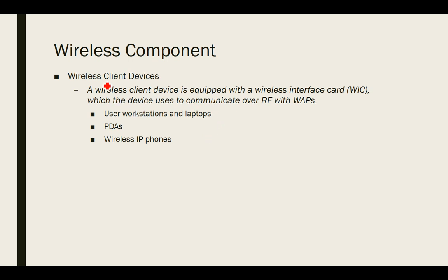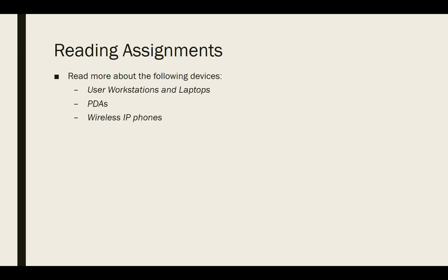The second component is wireless client devices, which include user workstations, laptops, PDAs, and wireless IP phones — all devices used to access wireless services. As a reading assignment, you should explore these wireless client device types further from the textbook.